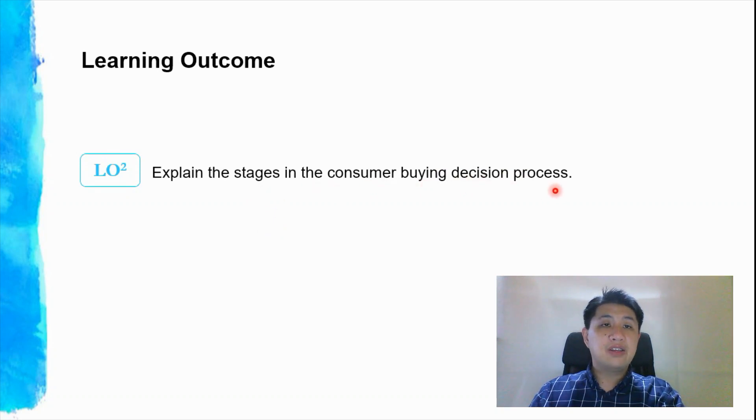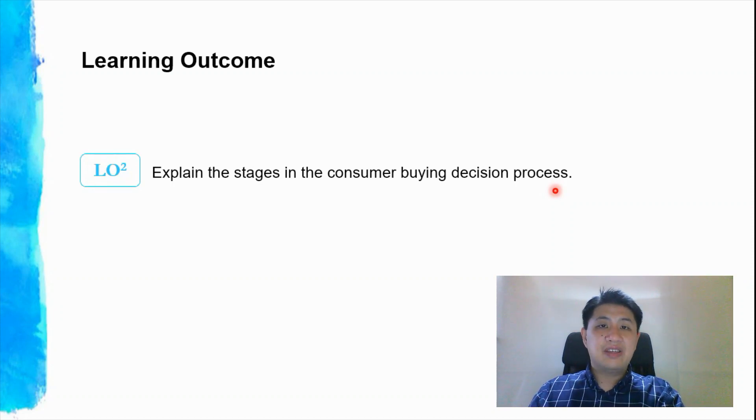That summarizes the stages in the consumer buying decision process — the five steps from need recognition all the way to post-purchase behavior. See you in the next video.